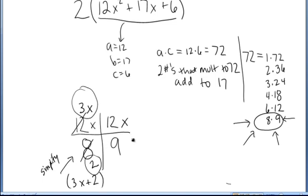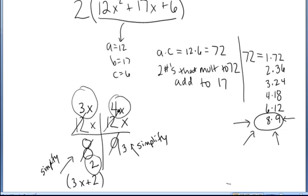Similarly, over here on the right side, I'm going to think of this as the fraction 12 ninths and simplify that. 3 goes into 12 and 3 goes into 9. 3 goes into 12 four times, so 12x simplifies down to 4x. 3 goes into 9 three times, leaving 4x and 3. So the other factor is 4x plus 3.